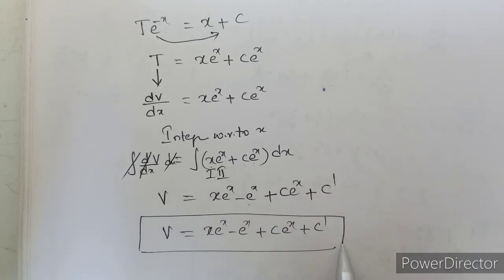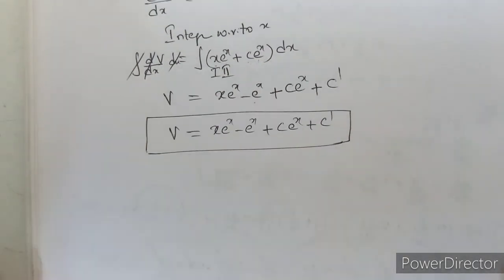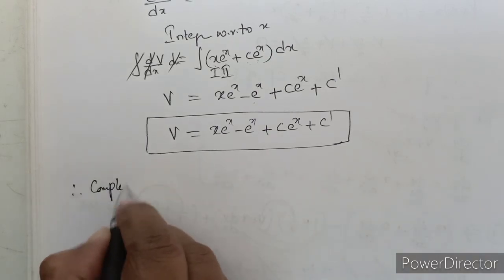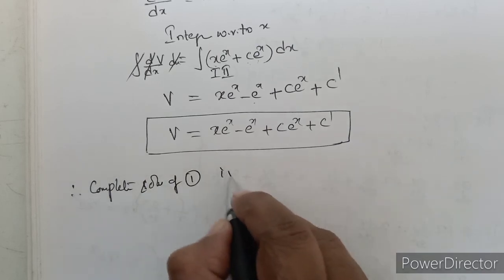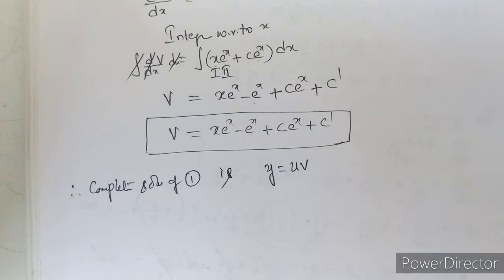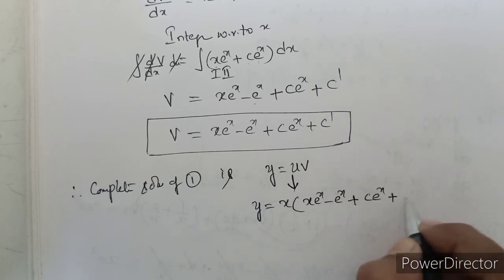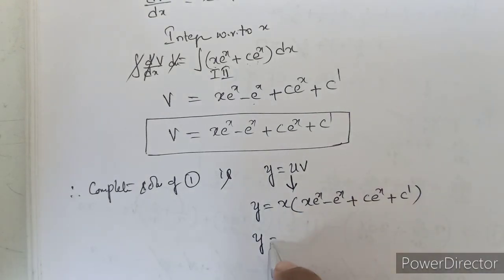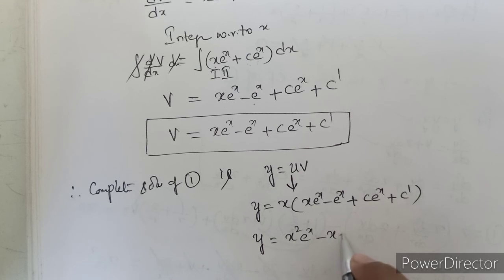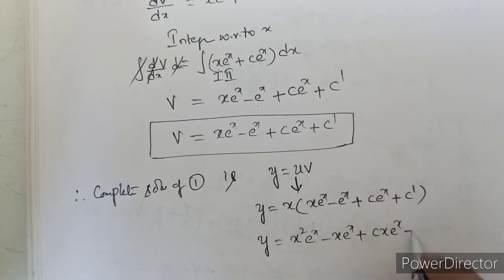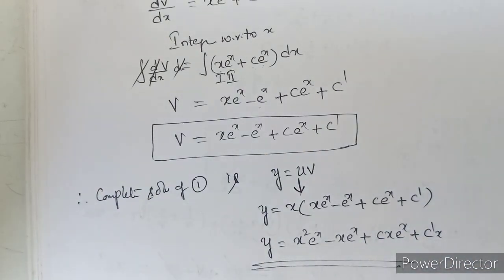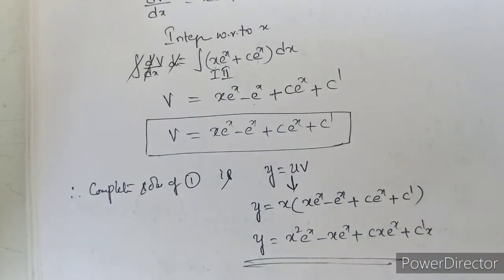The complete solution of equation 1 is y = uv, where u = x and v = x·e^x − e^x + c·e^x + c′. Therefore y = x·(x·e^x − e^x + c·e^x + c′) = x²·e^x − x·e^x + c·x·e^x + c′·x. This is the complete solution of equation 1. In this session we discussed one problem; in the next session we will discuss more problems. Hope you understood this class. Thank you.